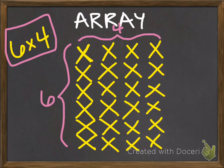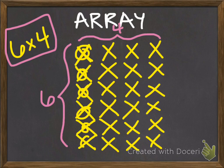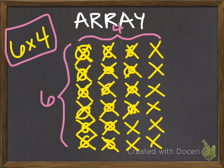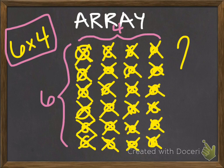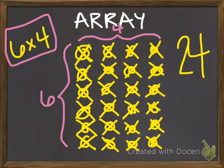So, to find out the total, you need to count all of the objects in the array: one, two, three, four, five, six, seven, eight, nine, ten, eleven, twelve, thirteen, fourteen, fifteen, sixteen, seventeen, eighteen, nineteen, twenty, twenty-one, twenty-two, twenty-three, twenty-four. So, again, we find out that she gave away a total of twenty-four candies. We know from this array that six times four equals twenty-four.